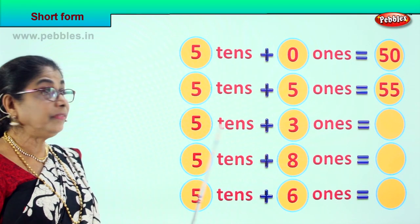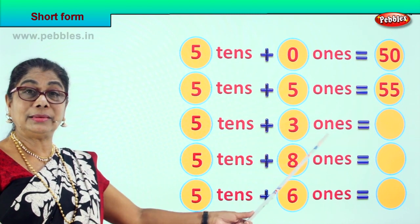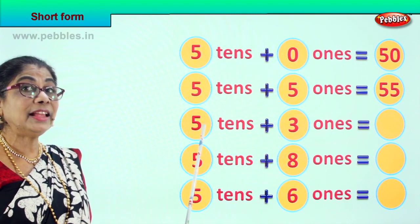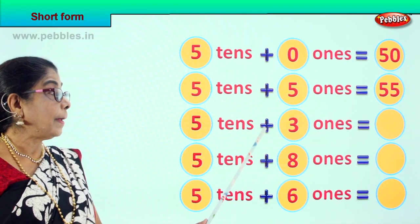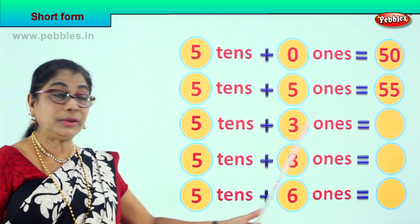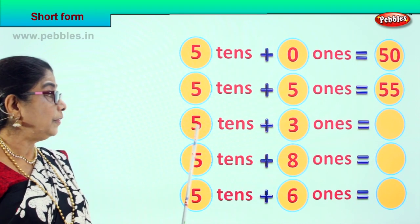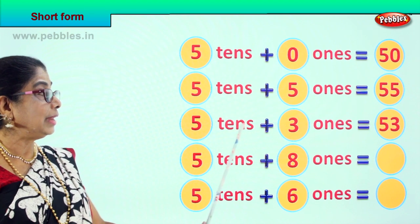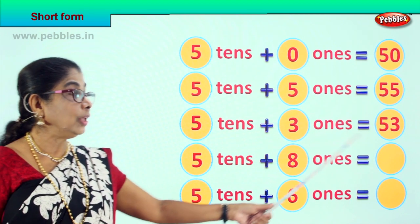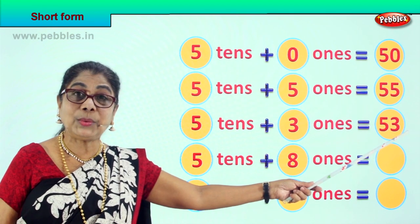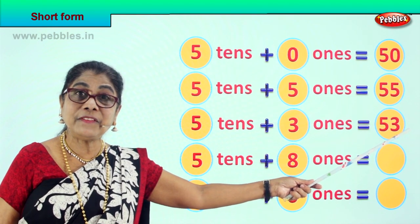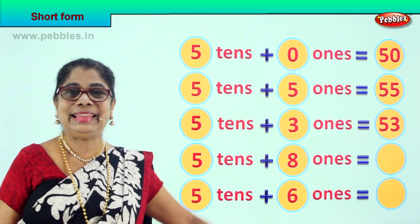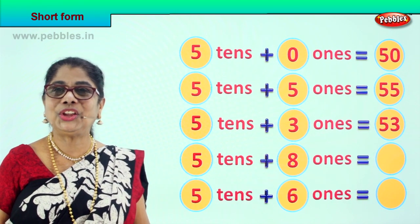5 tenths plus 3 ones. That is, 5 tenths is 50. Plus 3 ones equal to? 50 plus 3. 5 tenths plus 3 ones is equal to? 50 plus 3? 53. Good.